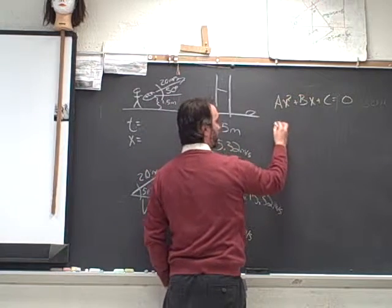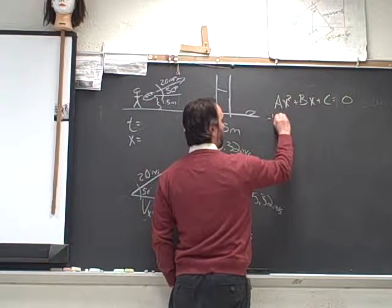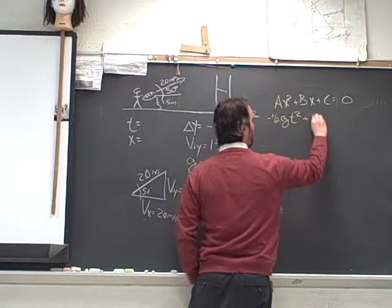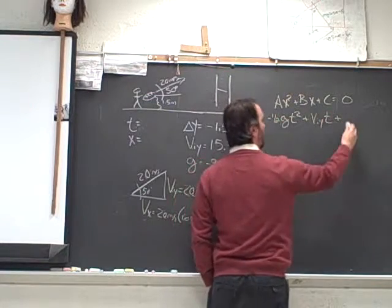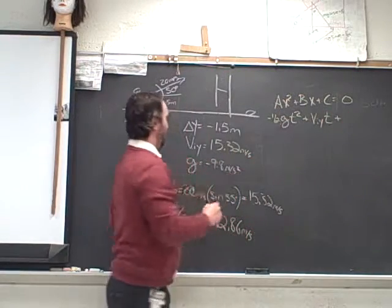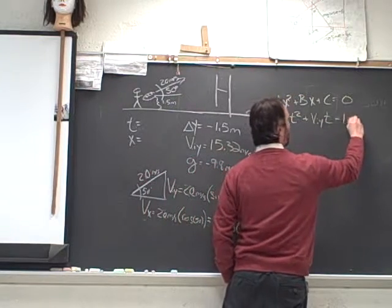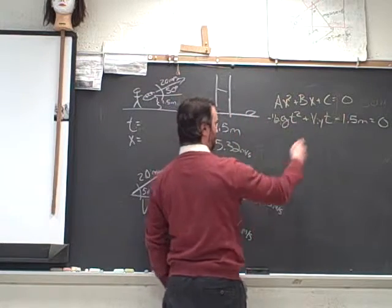And let's identify what each of our terms are. Our ax squared is going to be the same as our negative one-half gt squared plus our vi in the y direction times time, plus our displacement of negative 1.5 meters, equals zero. So I'll fill in the rest of our numbers here.